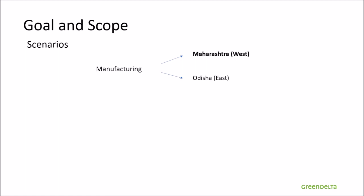The first variable is the location of manufacturing. The base case takes place in Maharashtra in the west of India, while the alternative scenario is in Odisha in the east of the country. These locations are among the biggest producing regions of organic cotton in India. For the behavior of the user, the first variable is the number of washes. The base case assumes washing once a week, while the alternative scenario assumes one every two weeks — so respectively 52 and 26 washings in total.